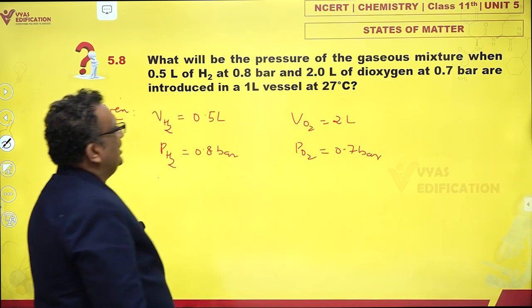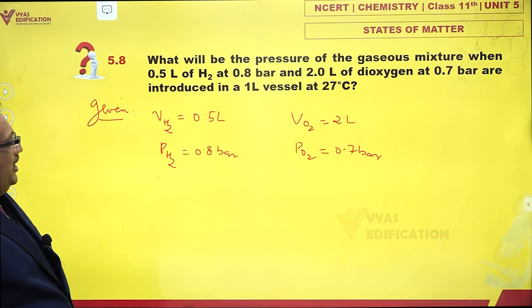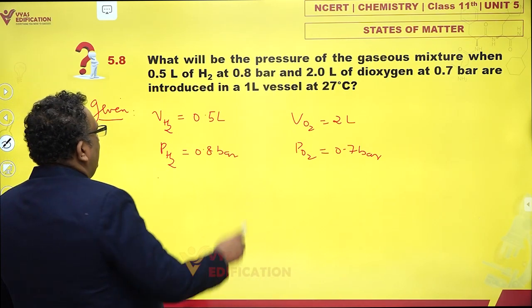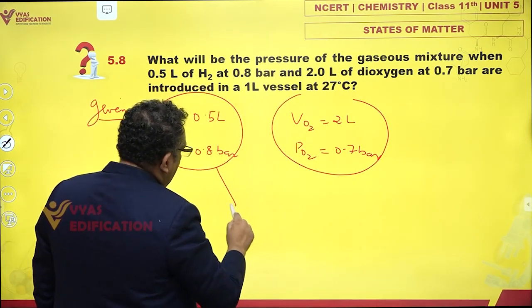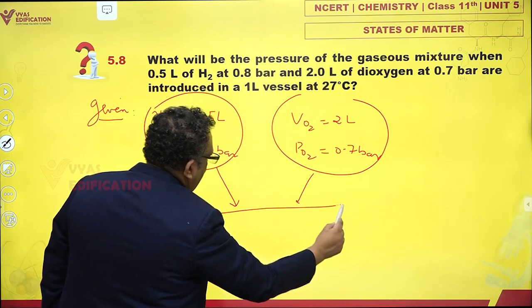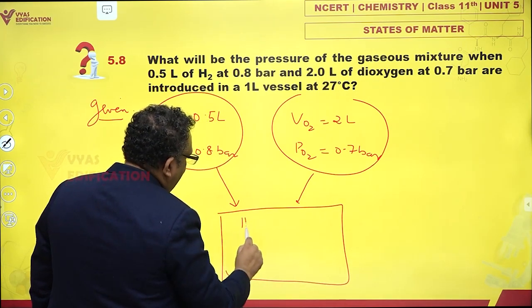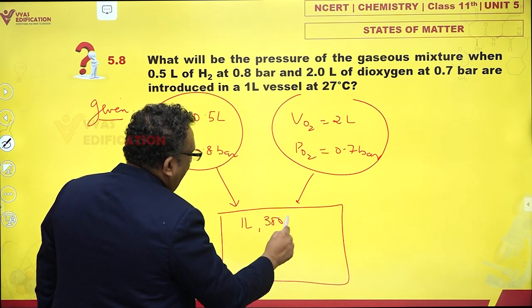These are introduced in a 1 liter vessel at 27 degrees Celsius. You have two samples which are being mixed and introduced in a 1 liter, 300 Kelvin vessel - 27°C corresponds to 300 Kelvin.